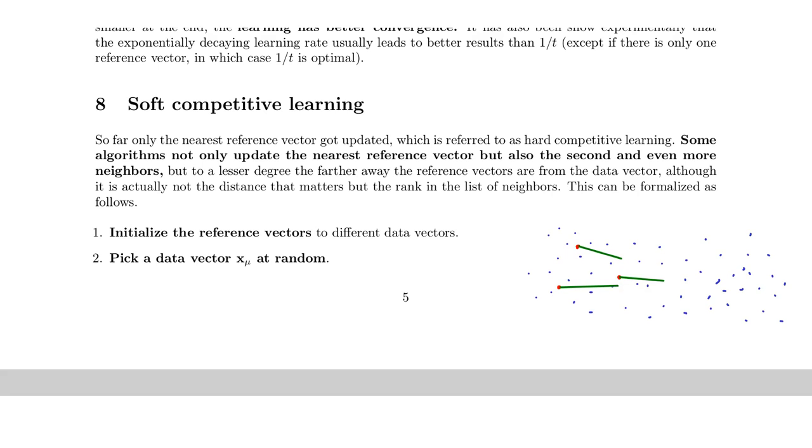So this would be if the two neighbors would also be moved by a third but that will in the end lead to a situation where all the reference points are at the same location. So what you would rather do is you move them to a lesser extent. So maybe let's say only by 10% towards the data point.